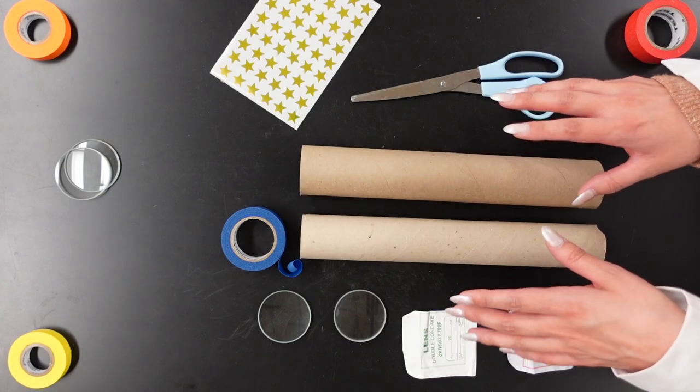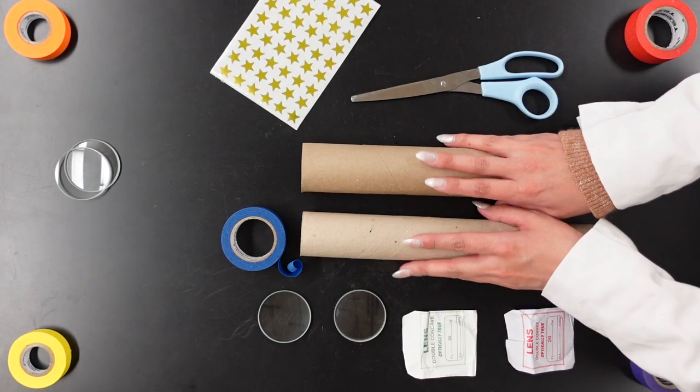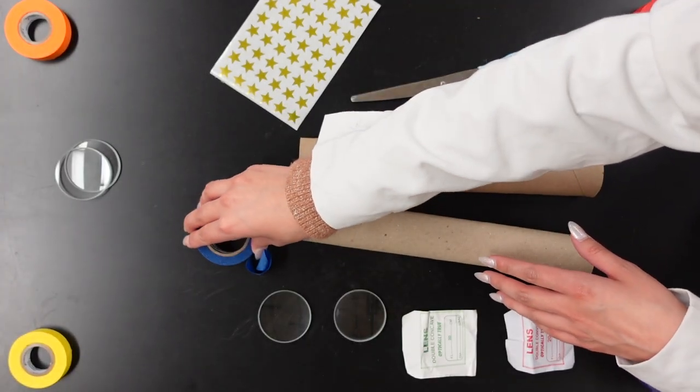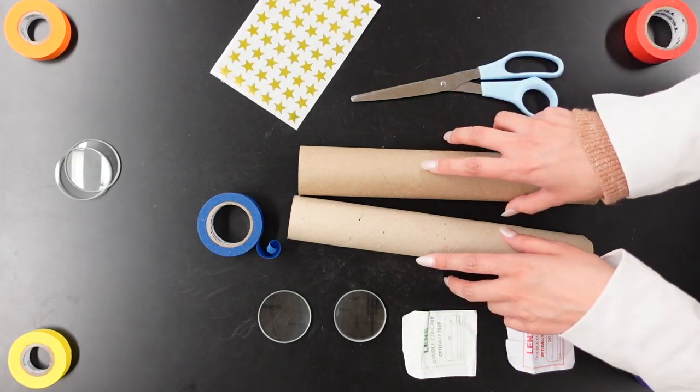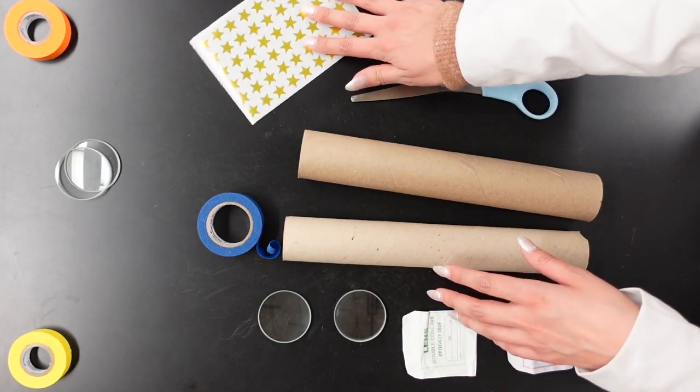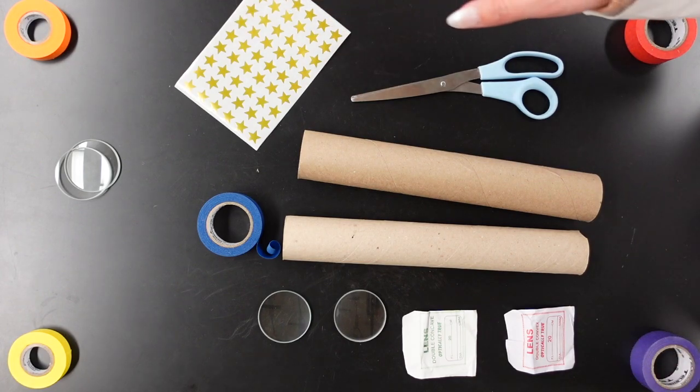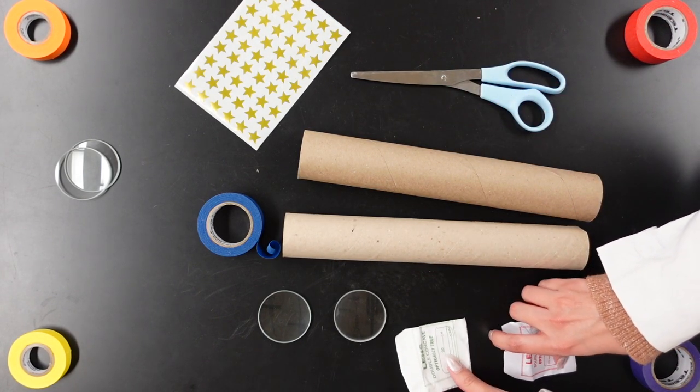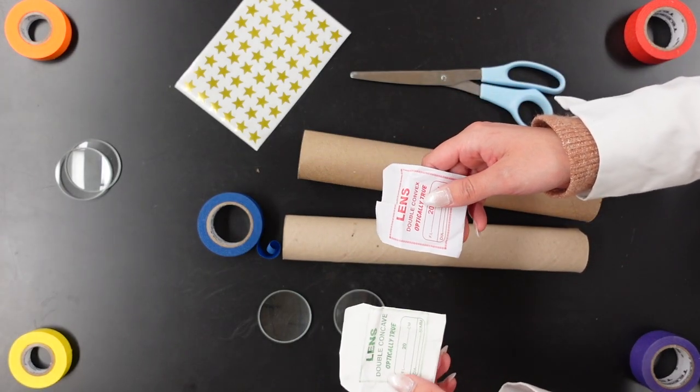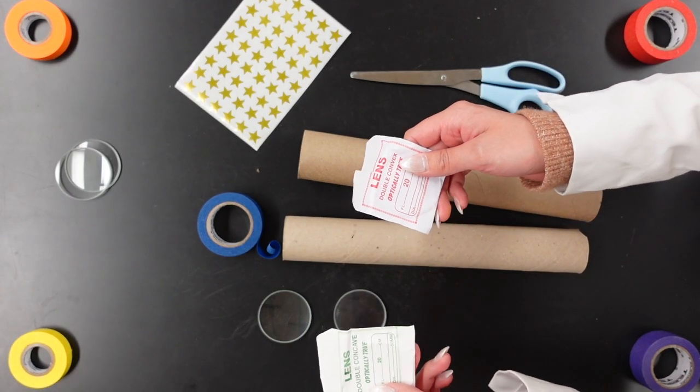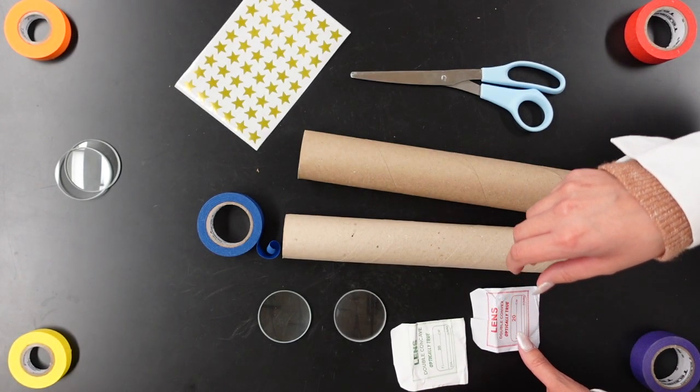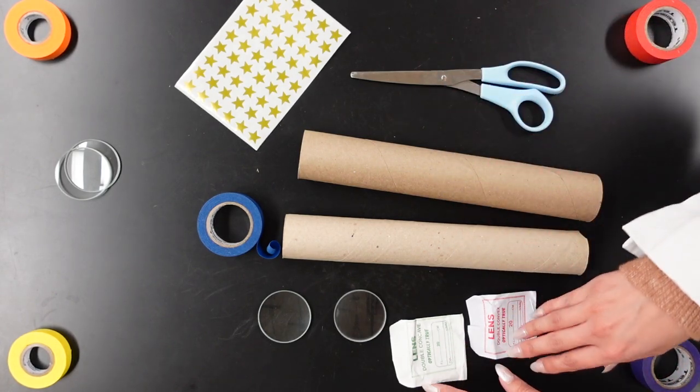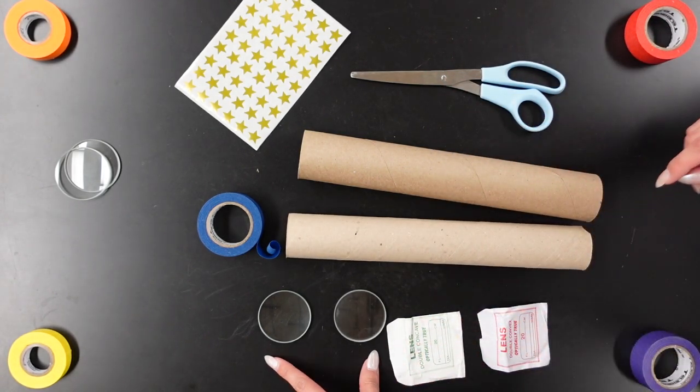Today what we're going to need for this demonstration is two empty, clean paper towel rolls, a little bit of masking tape or scotch tape, and optional is some star stickers just to make it fun. You might need some scissors, and then the tricky ones are going to be the lenses. You'll want a double concave lens and a double convex lens. We'll include links in the video or below the video for you to source those easily.